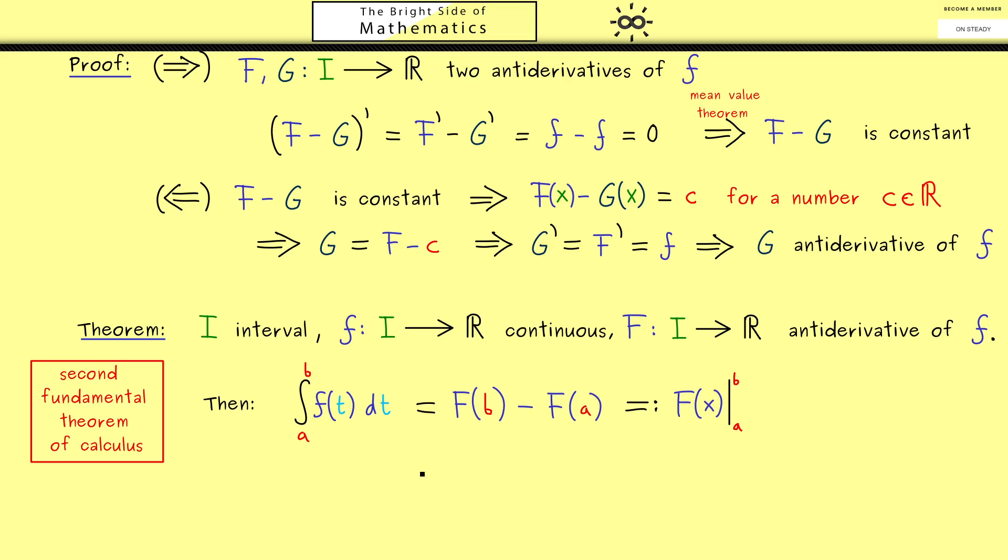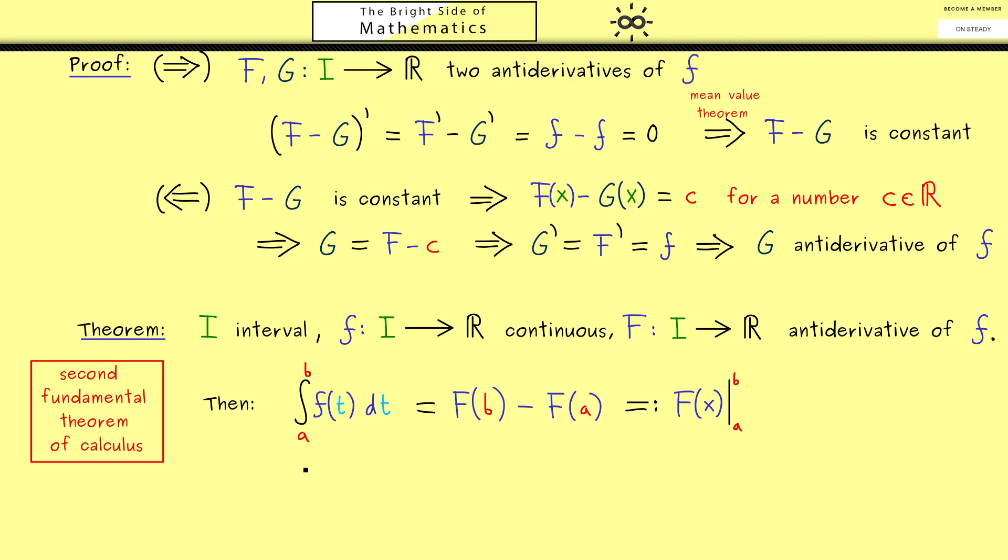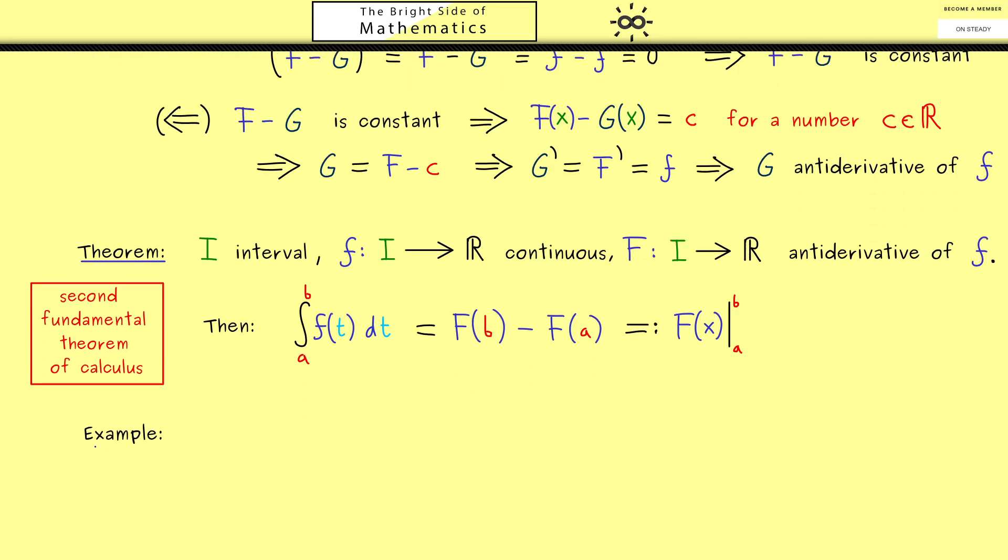If you know an antiderivative of f, you can immediately use it to calculate an integral. Therefore, maybe before we do the proof, let's look at an example and see how this works. So I would say let's take the cosine function.